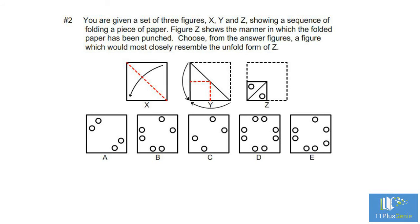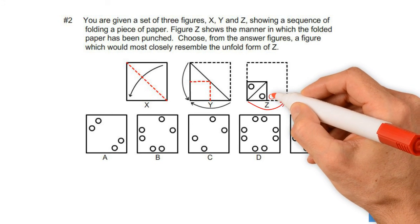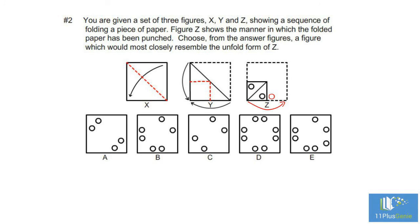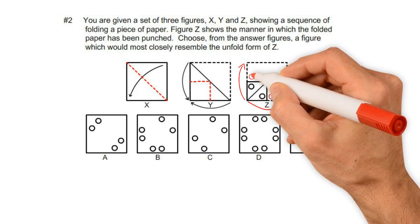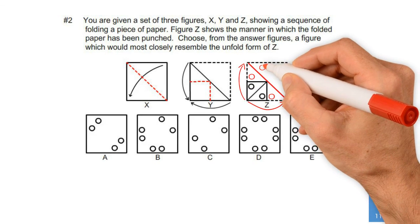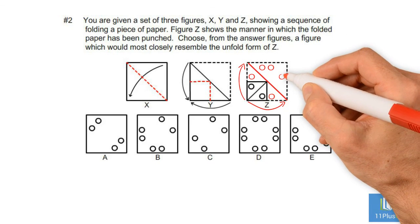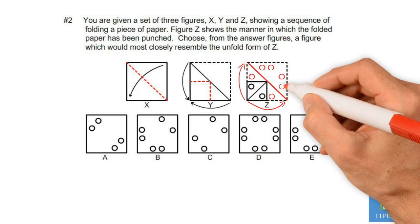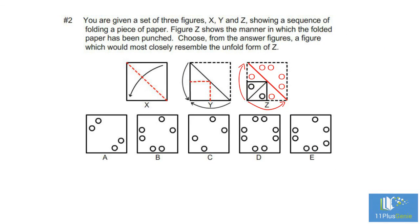Two holes have been punched in the square that is formed. If we unfold the bottom triangle there will be a hole here, and if we unfold the top triangle there will be a hole here. This pattern must be a mirror image in the diagonal — there will be four holes in these positions. The correct answer is D.